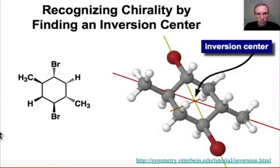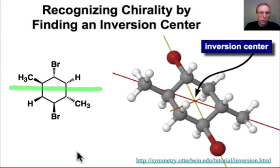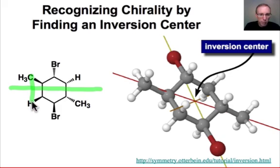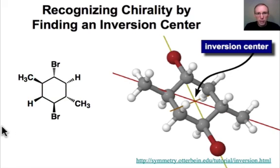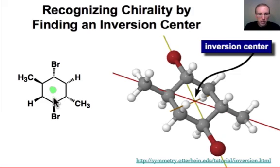In addition to a plane of symmetry, a molecule that has an inversion center is also achiral, as the example here illustrates. First, convince yourself that this fairly complicated molecule has no plane of symmetry. Any way that you try to divide the molecule into two equal parts, you'll see that some groups upon reflection find a different group on the opposite side. No matter how you try, you'll never find a plane of symmetry in this molecule.